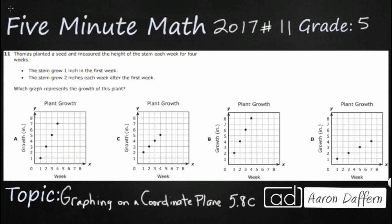So we have Thomas planting a seed and he's measuring the height of the stem each week for four weeks. All we have are two pieces of information: the stem grew one inch in the first week and then two inches each week after the first week. So there's slightly different growth rates. Which graph best represents this? But we've got no x and y coordinates given. That's going to be extremely confusing.